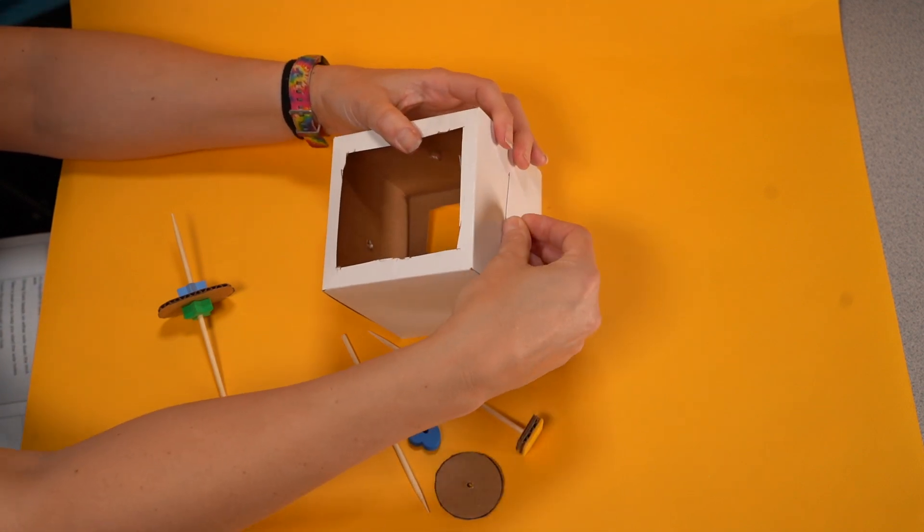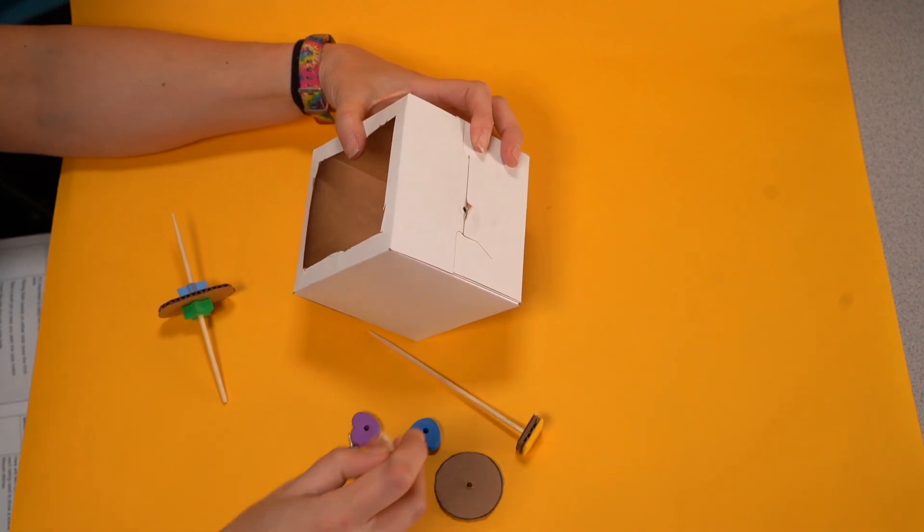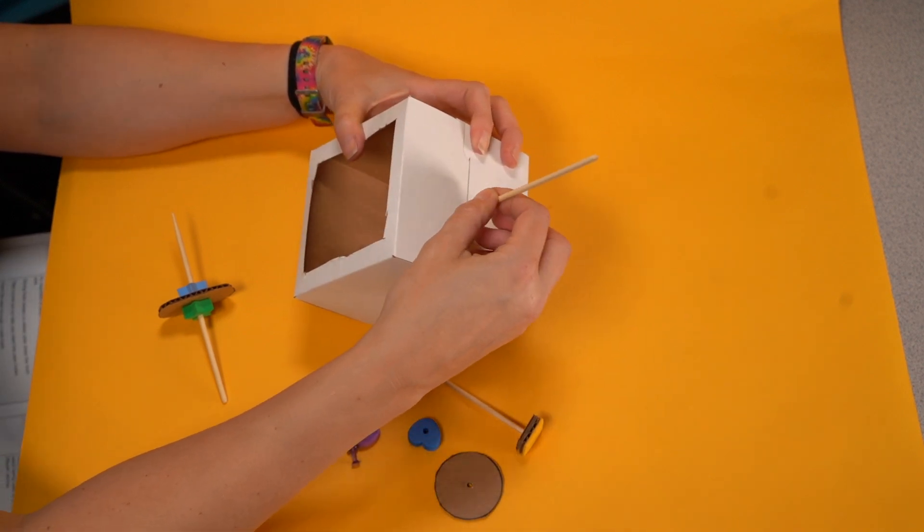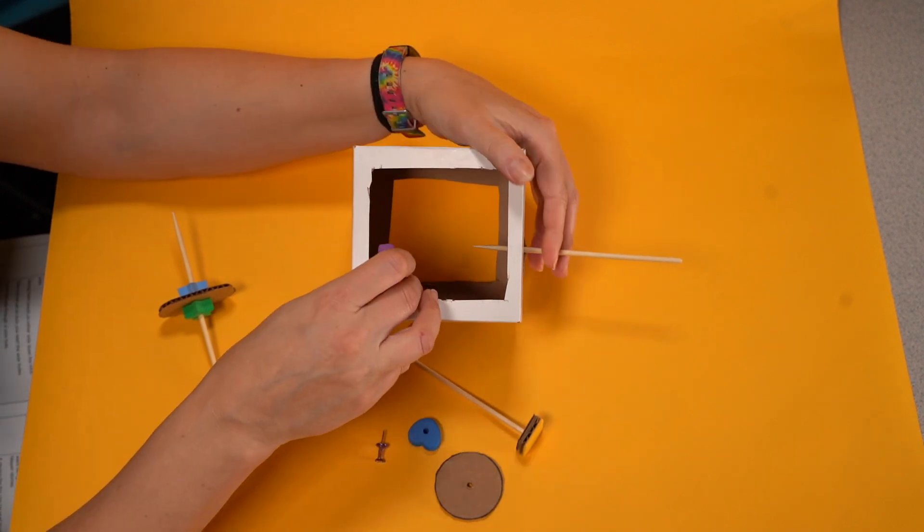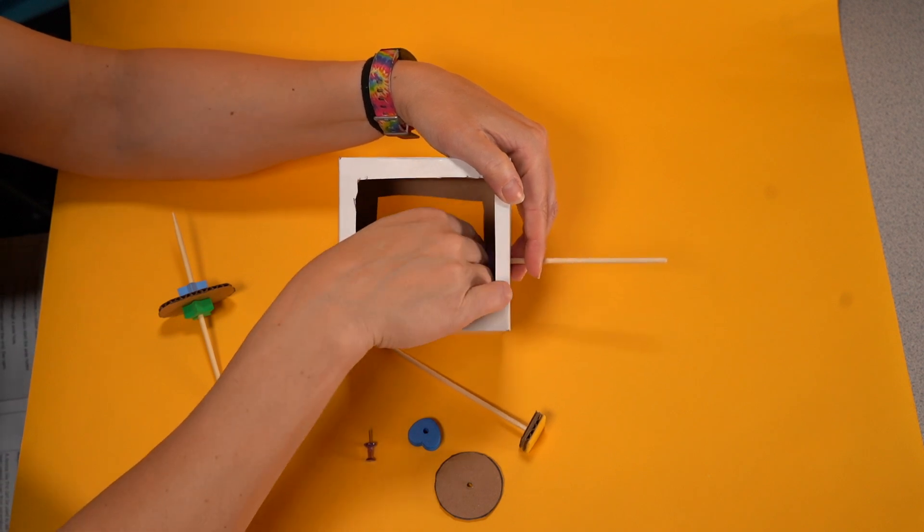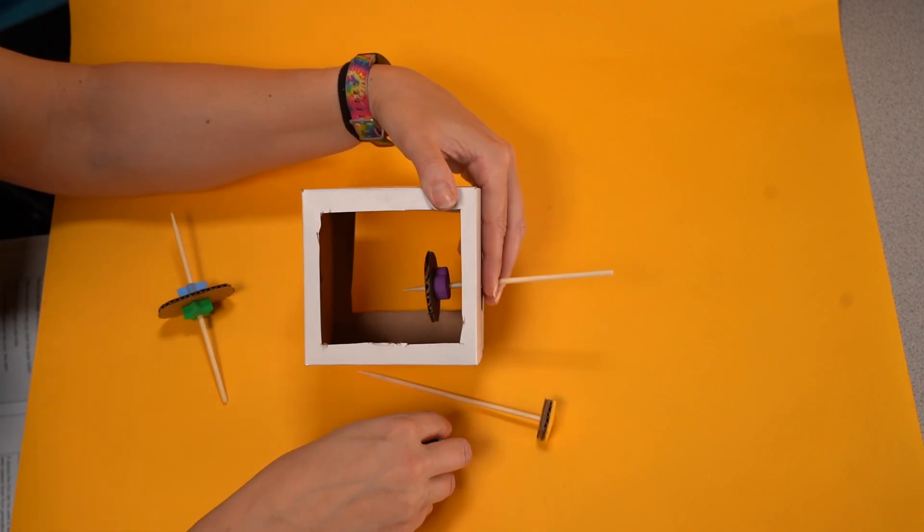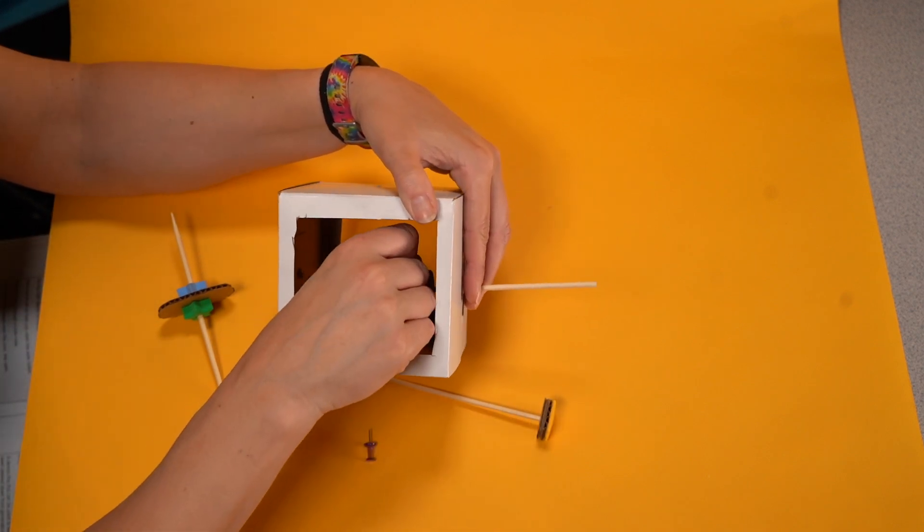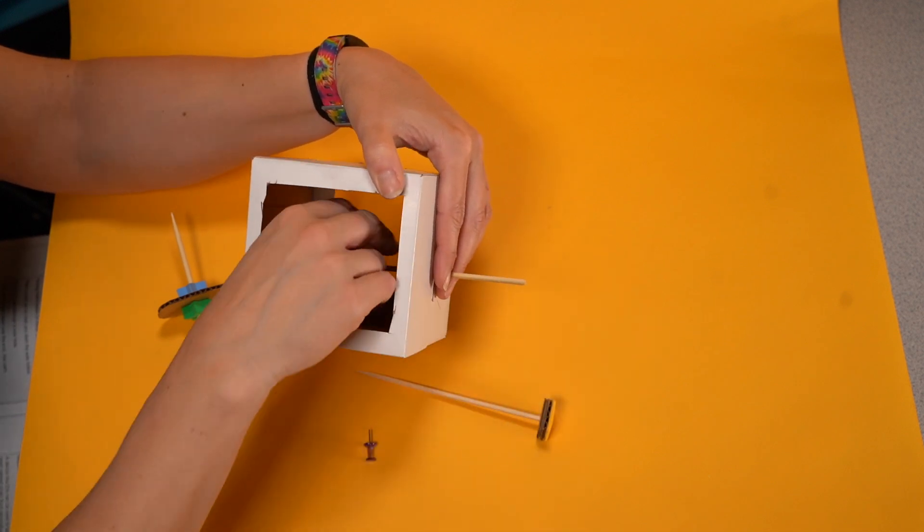Take a pushpin to help you start the axle holes. Insert the axle through a side hole. Then slip a foam bead over the end. Then slip the cam on, followed by another foam bead. Then go through the other hole.